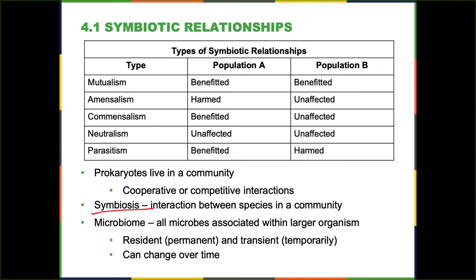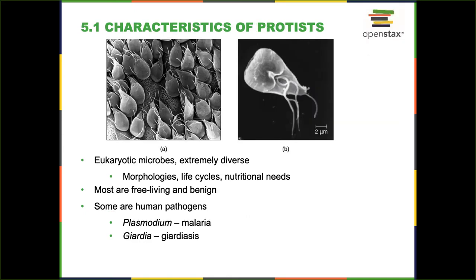That's enough for bacteria for now — we're going to talk about bacteria plenty. Let's talk about some of the other types of microbes. We're going to spend a little bit of time talking about eukaryotic microbes, starting with the protists. Remember, protists are eukaryotic microbes. As a group, they're extremely diverse — so many different morphologies, life cycles, and nutritional needs. They're really hard to define; oftentimes they're kind of a miscellaneous group of microbes that really didn't classify well anywhere.